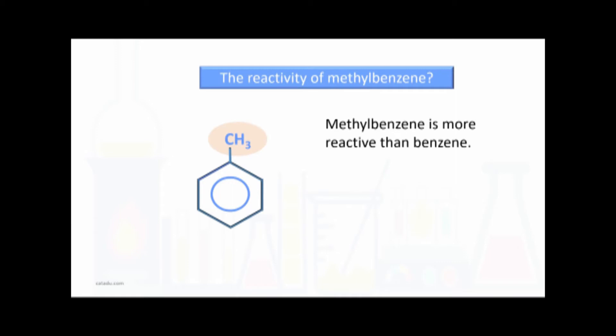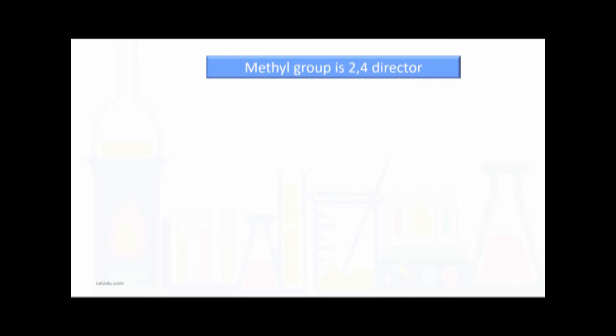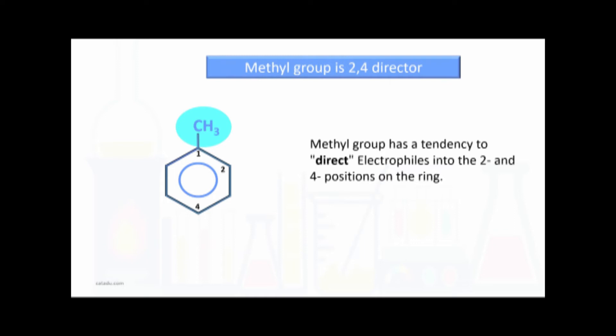The reactivity of methylbenzene: methylbenzene is more reactive than benzene because of the tendency of the methyl group to push electrons towards the ring. The methyl group is a 2,4-director — it has a tendency to direct electrophiles into the 2 and 4 positions on the ring.